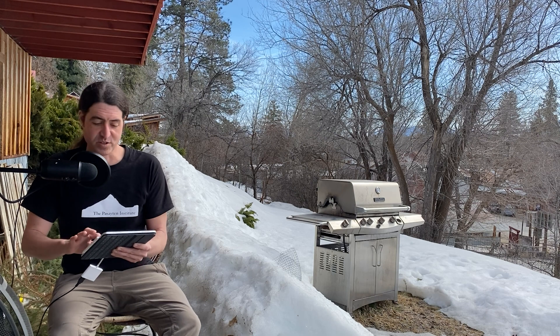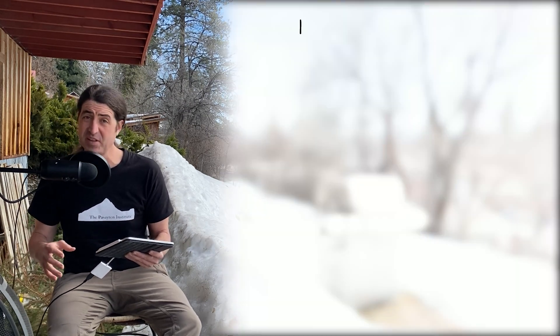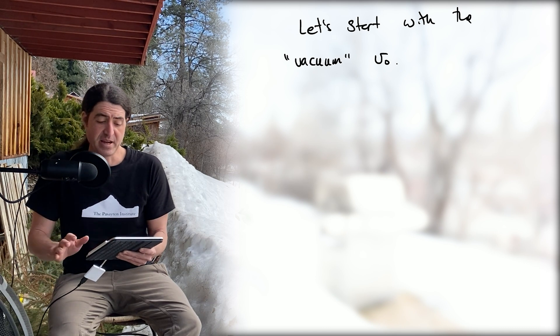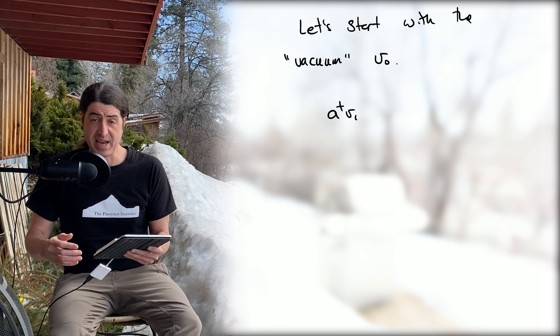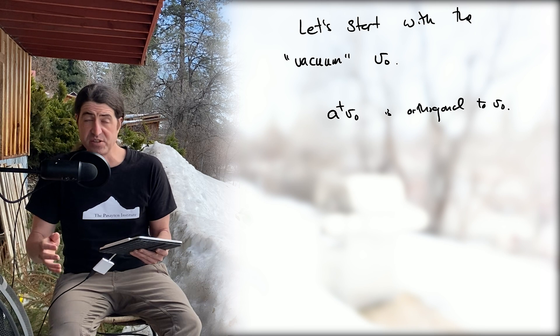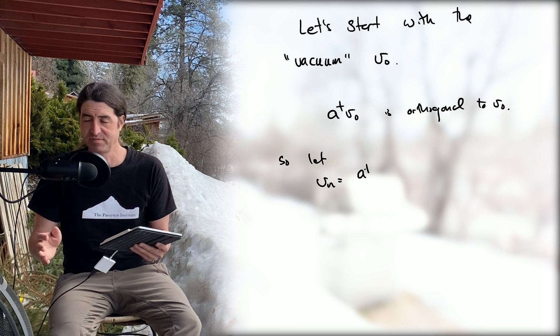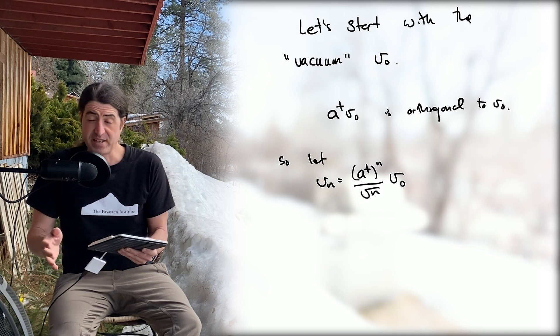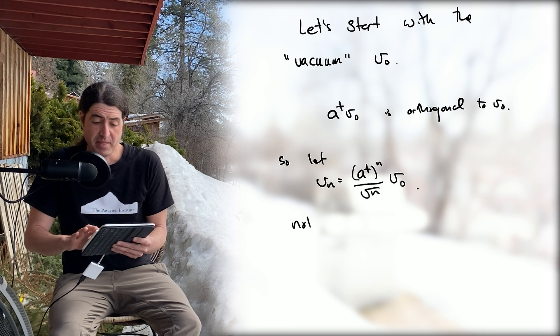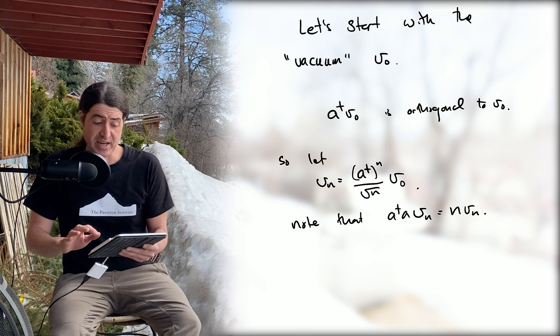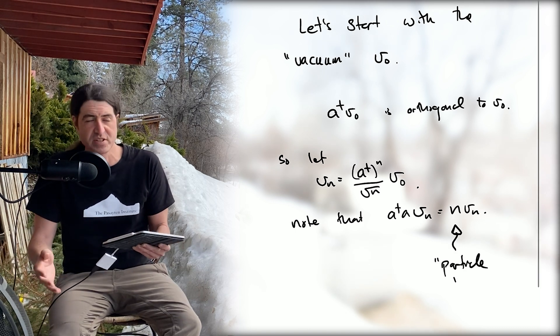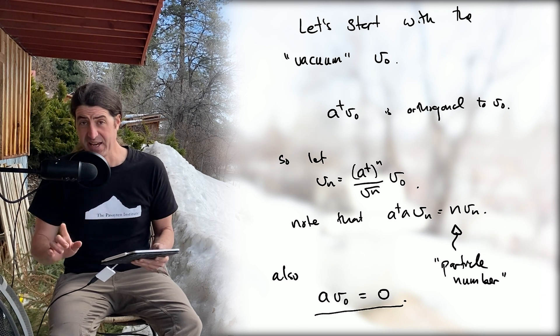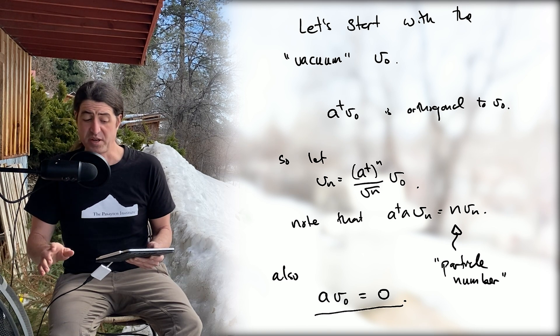I'll just sketch the module constructions for you here. First, we start with a vacuum, which you can think of as a lowest weight state—let's call it v0. We're going to act on v0 with a daggers, and that will get new linearly independent states. If we do this n times, we might get the vector v_n, which we normalize with the square root of n: a dagger to the n on v0. These are all eigenstates of the joint operator a dagger a with eigenvalue n. We're going to demand that a acting on v0 is equal to zero—in other words, a annihilates the vacuum vector.